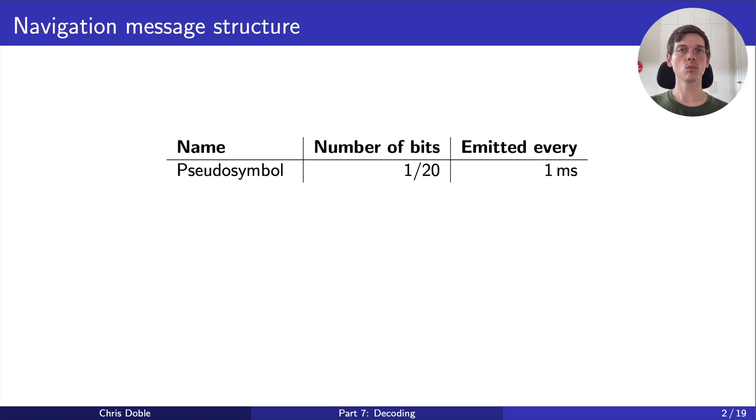Once we've received enough of them, we can collect them into groups of 20, each corresponding to a bit of the navigation message. At this point, we still don't know how they map to binary zeros or ones, so I like to call them pseudo-bits.